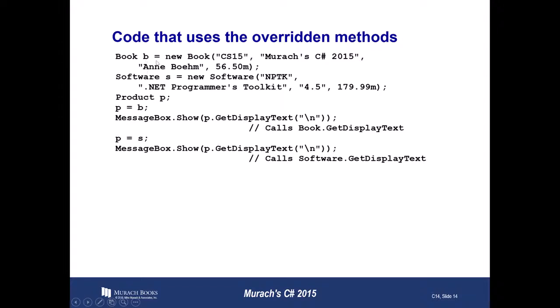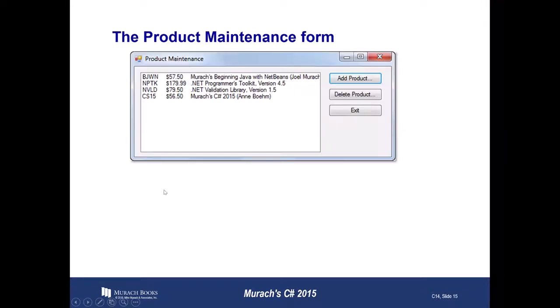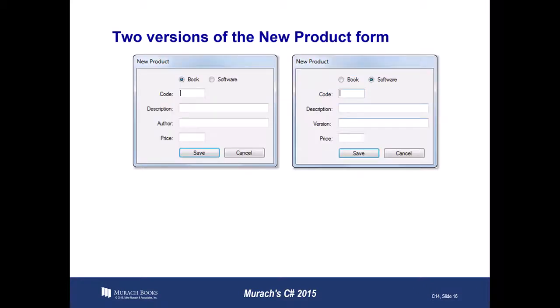Because Book and Software both inherit from Product, we can set a Product variable equal to a Book or Software because they have an is-a relationship — a Book is a Product, and Software is a Product. That's what that is-a relationship means. We'll show the product maintenance application in the next lecture, and then we'll see two versions of the new product form before we start diving into Visual Studio.